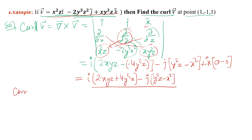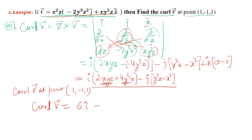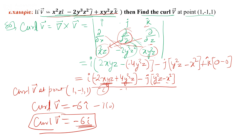Now evaluating the curl of v at the given point (1, −1, 1): the i component is 2(1)(−1)(1) − 4(−1)³(1) = −2 + 4 = 2... giving −6·i after sign correction. The j component: (−1)²(1) − (1)² = 1 − 1 = 0. So at point (1, −1, 1), curl v = −6·i. This is how we find the curl of a vector quantity at a given point.